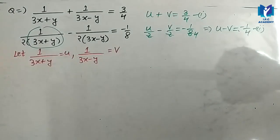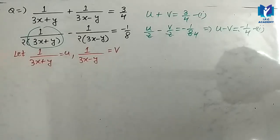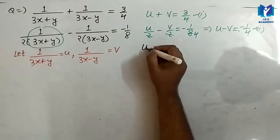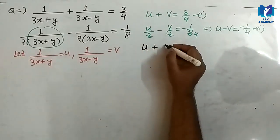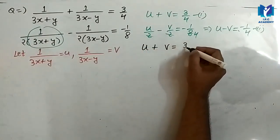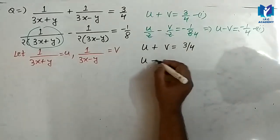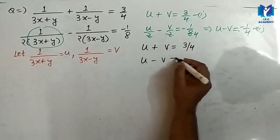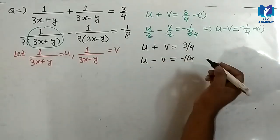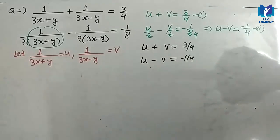So, we have to apply the elimination method here to get the value of u and v. यहाँ पर u and v की value निकालना चाहते हैं. एक तरफ u plus v जो की 3 upon 4 के equal हैं, दूसरी तरफ u minus v जो की minus 1 upon 4 के equal हैं.